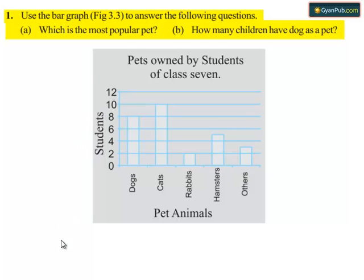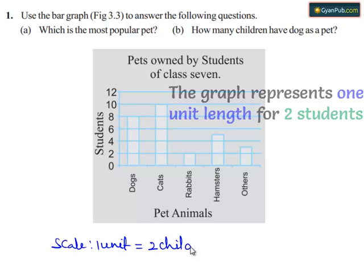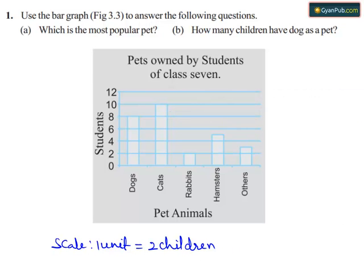Let's take the scale. One unit equals two children since we took the increment of two, so one unit equals two children.